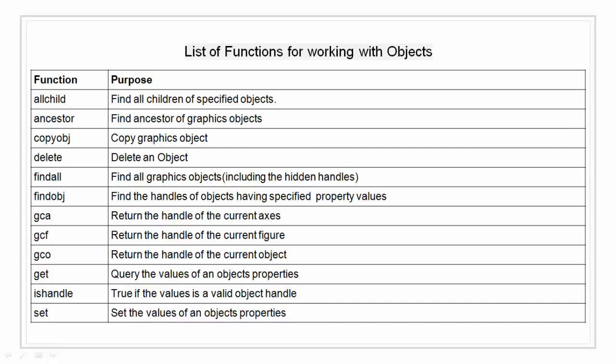Then we have findobj that finds the handles of objects having specified property values. We have gca that returns the handle of current axis. We have gcf that returns the handle of current figure. We have gco that returns the handle of current object. Then we have get function that queries the values of an object's properties. We have ishandle that returns true if the value is a valid object handle. We have set function that sets the value of an object property.